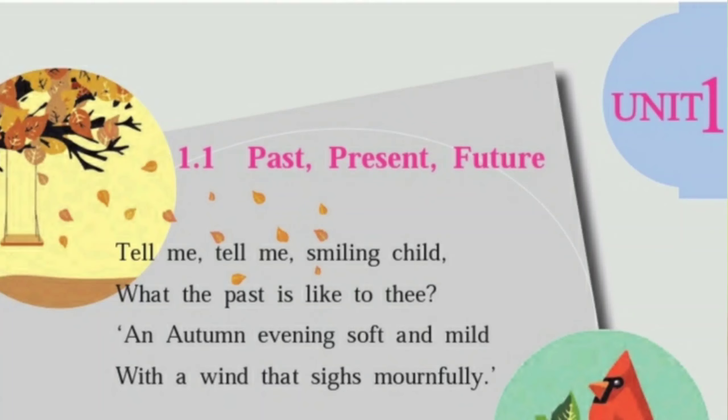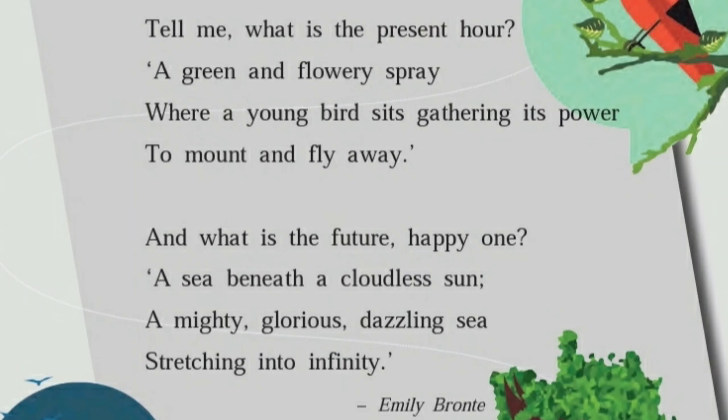The child replies: 'An autumn evening soft and mild, with a wind that sighs mournfully.' Autumn is a season where the tree sheds its leaves. 'Sigh' means a soft sound made with pain, and 'mournfully' means a sad feeling. So the child had a past with some sad moments.